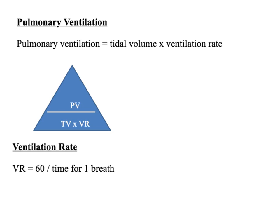Using a very similar formula to cardiac output, but this time for the lungs: pulmonary ventilation, which is the volume of air breathed out per minute. Here we have the tidal volume, and you multiply it by the ventilation rate or breathing rate. The triangle is pulmonary ventilation over tidal volume times ventilation rate — PV over TV times VR.